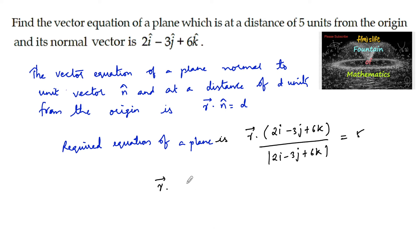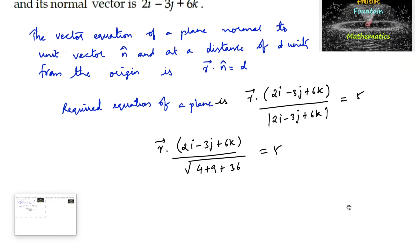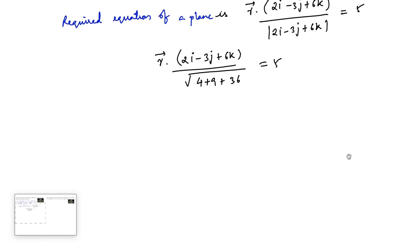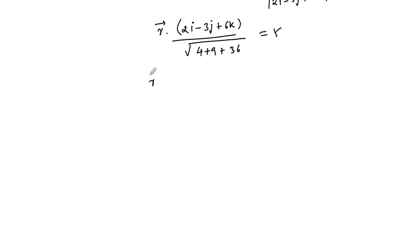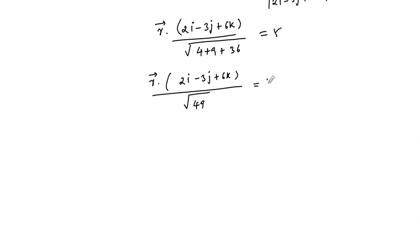So we can write r·(2i - 3j + 6k) upon the root of 2² + (-3)² + 6², which is 4 + 9 + 36 = 49. The square root of 49 is 7. Therefore the equation becomes r·(2i - 3j + 6k) / 7 = 5.